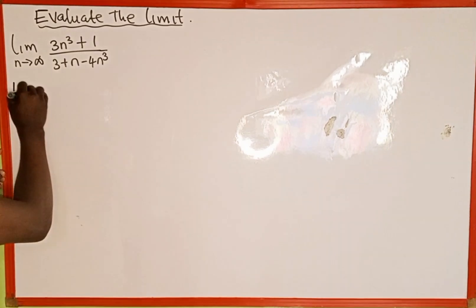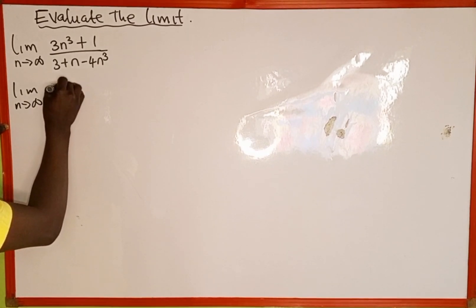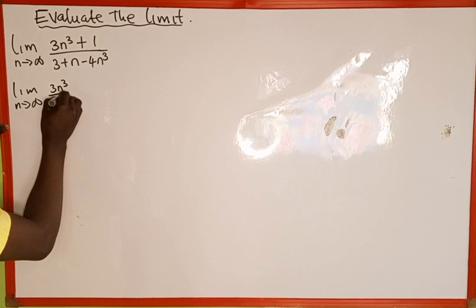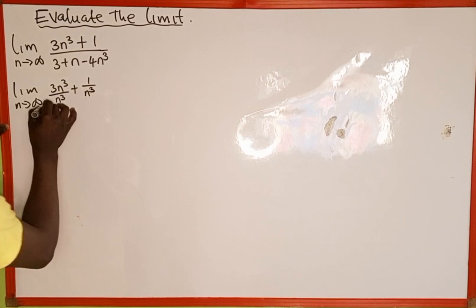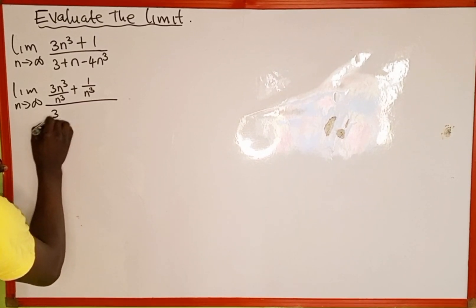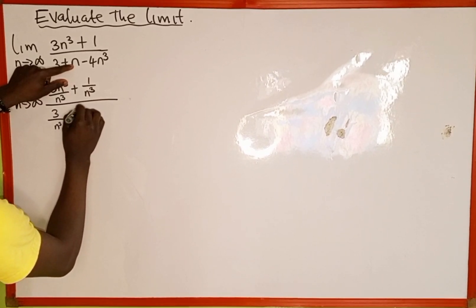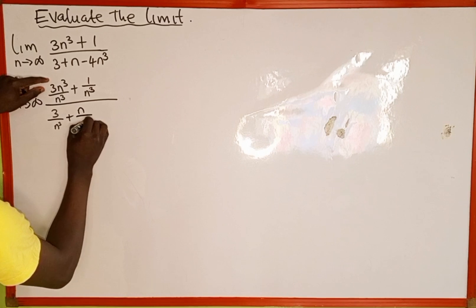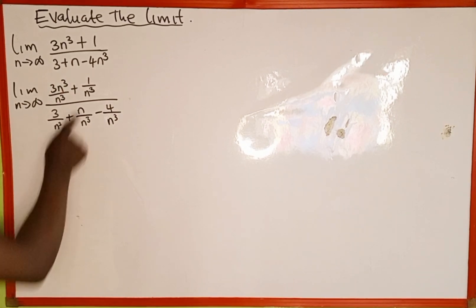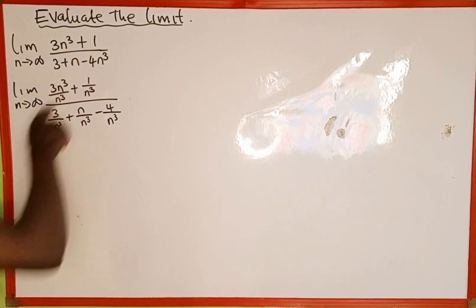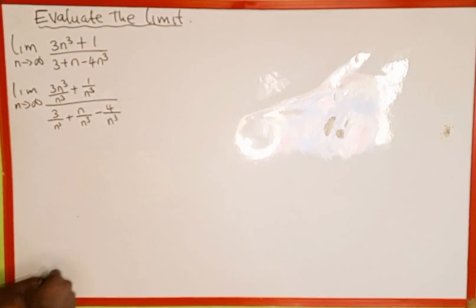This is going to be the same as: limit as n approaches positive infinity of 3n³ divided by n³, plus 1 divided by n³, all over 3 divided by n³, plus n divided by n³, minus 4 divided by n³, divided by n³. What we just did is divide each term in this function by the highest power of the variable n, which is n to the power 3.